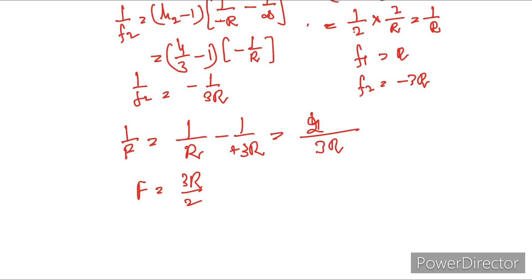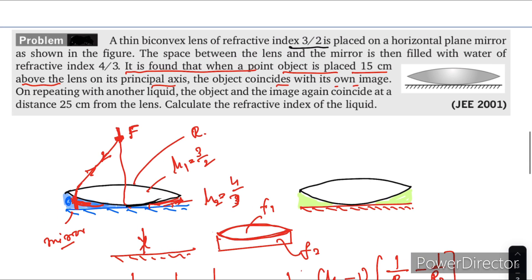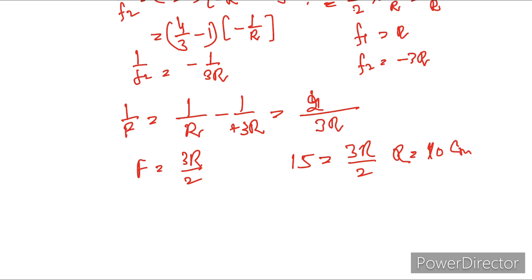Now in this question the object is placed at 15 cm, which coincides with the focus. So 15 = 3R/2, which gives R = 10 cm. This is the radius of curvature of the convex lens.